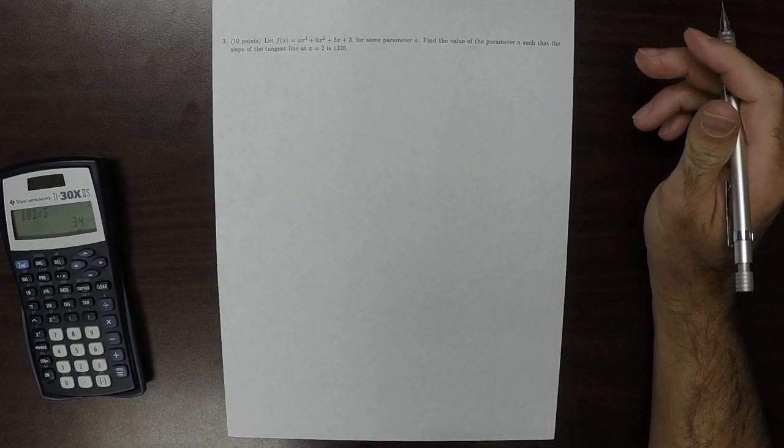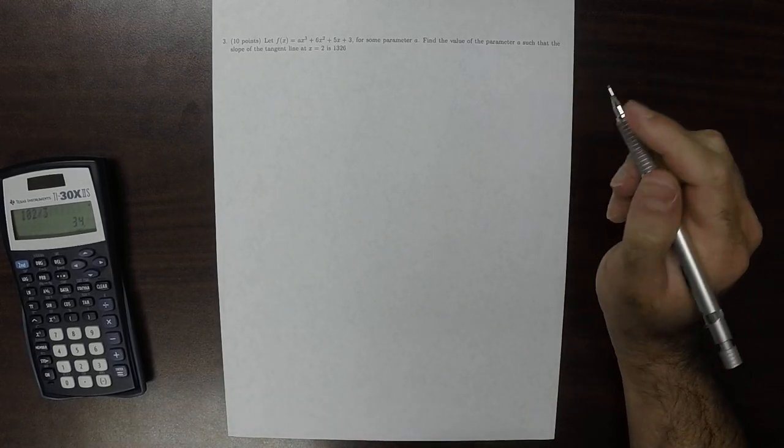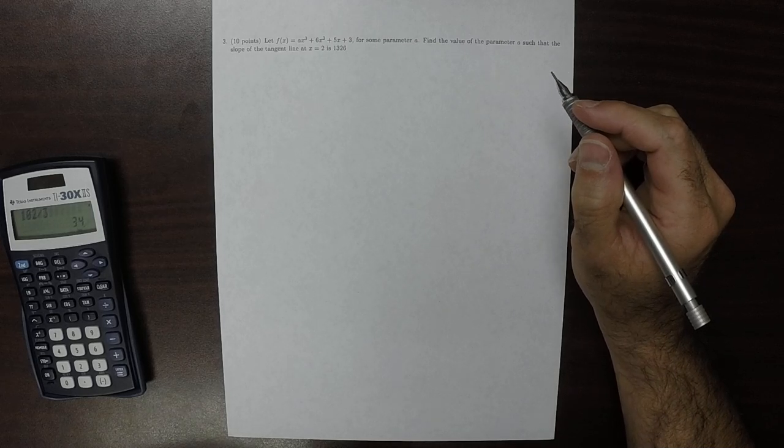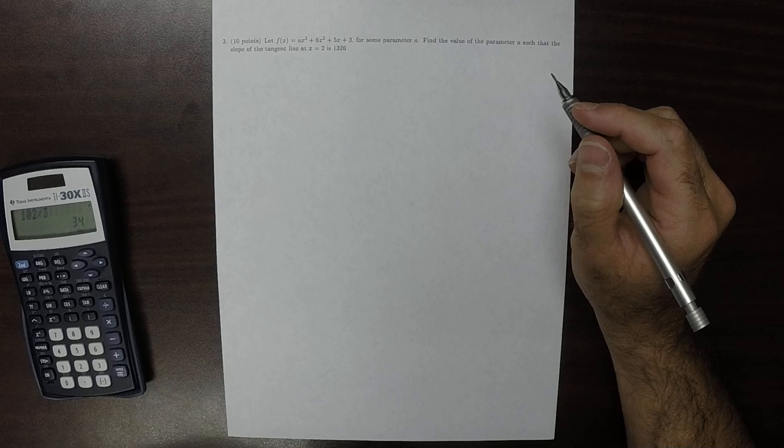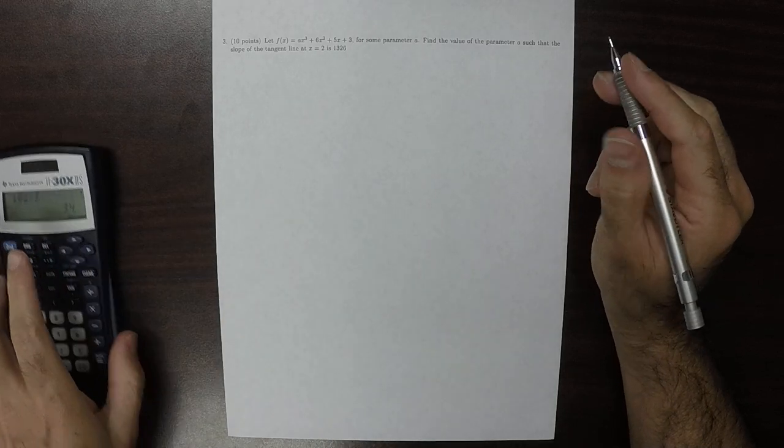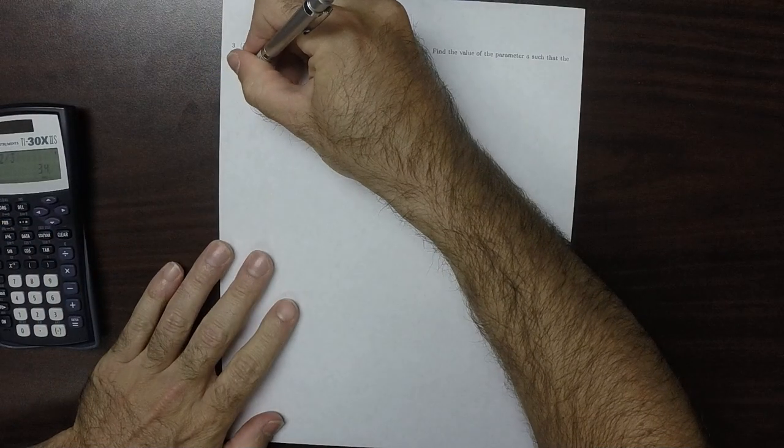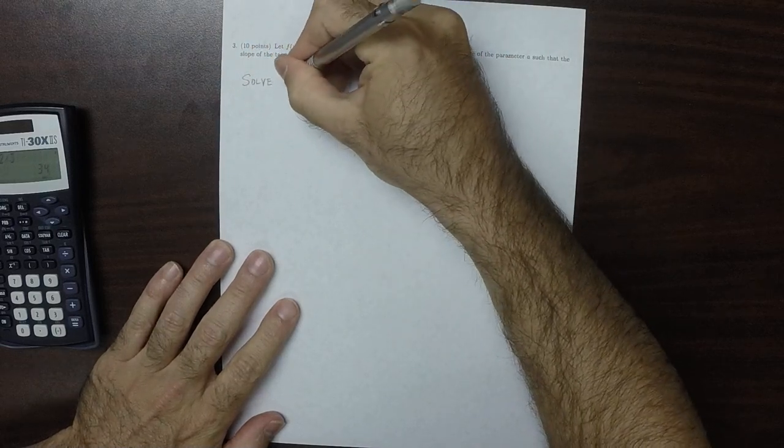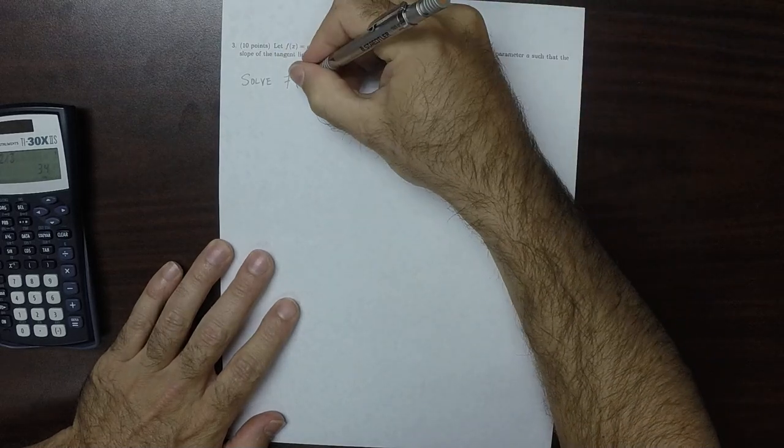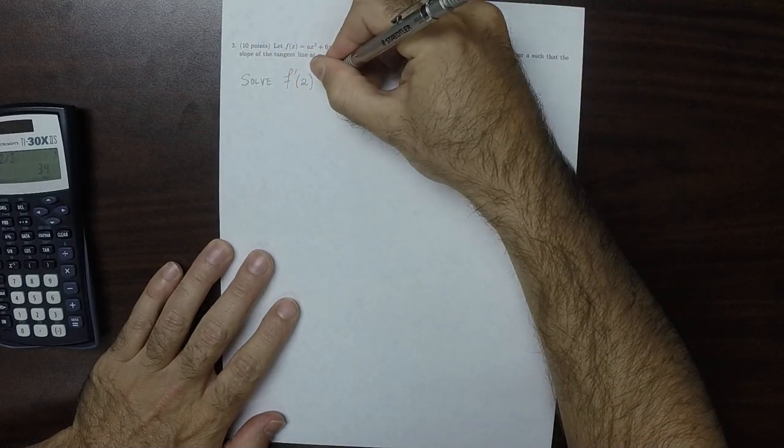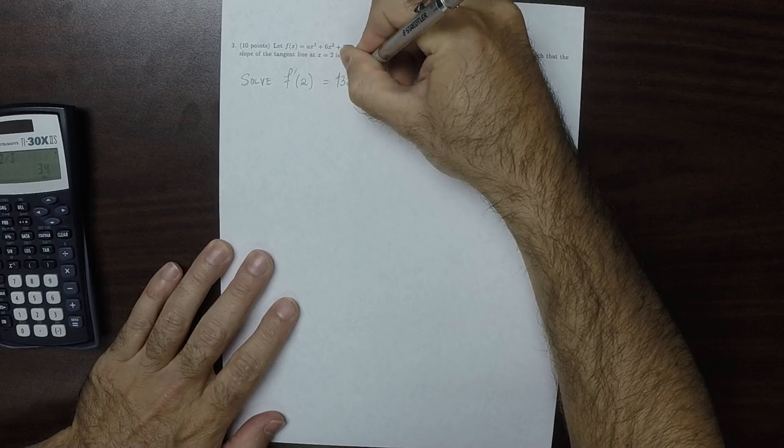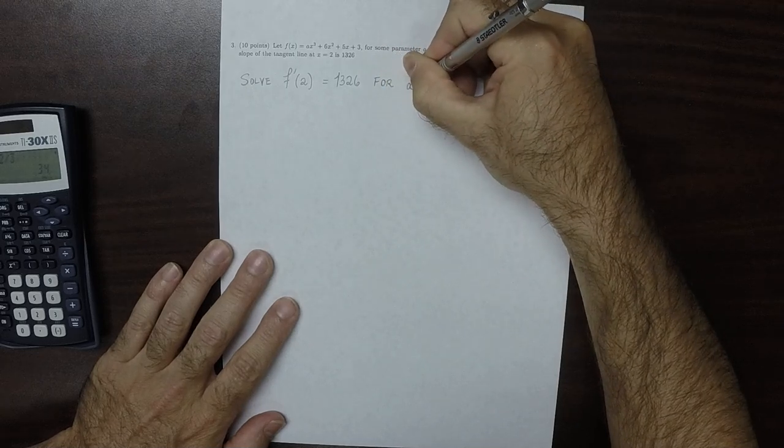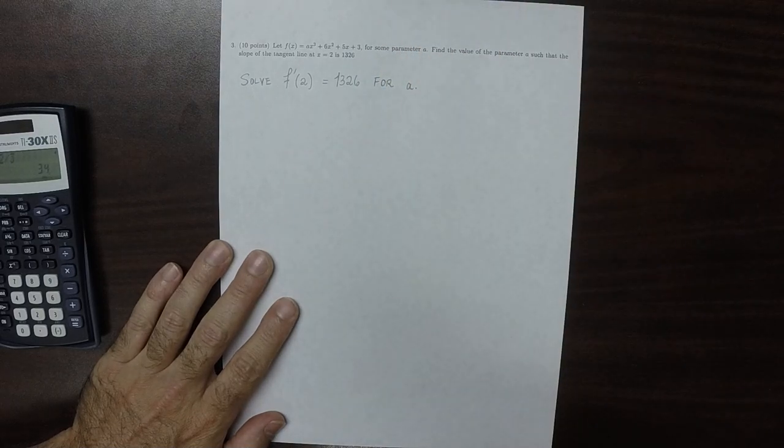And the last question. Find the value of the parameter A such that the slope of the tangent line at x equal 2 is 1326. So to translate this into plain language, we want to solve f prime, the derivative, evaluated at 2 equal to 1326 for the parameter A.